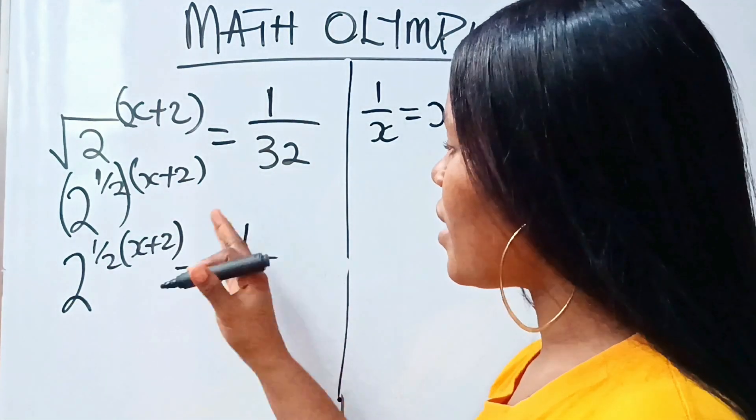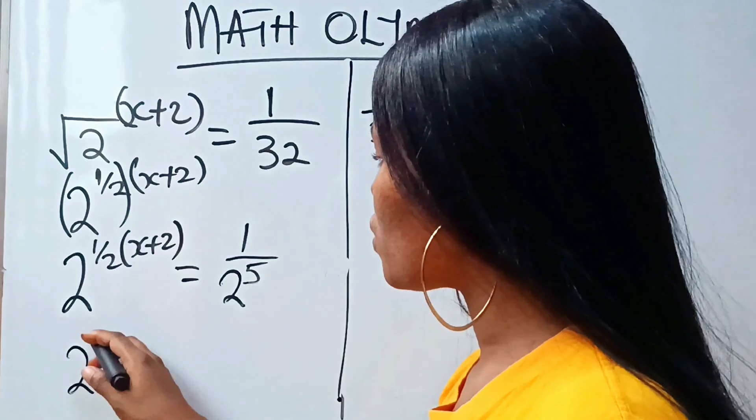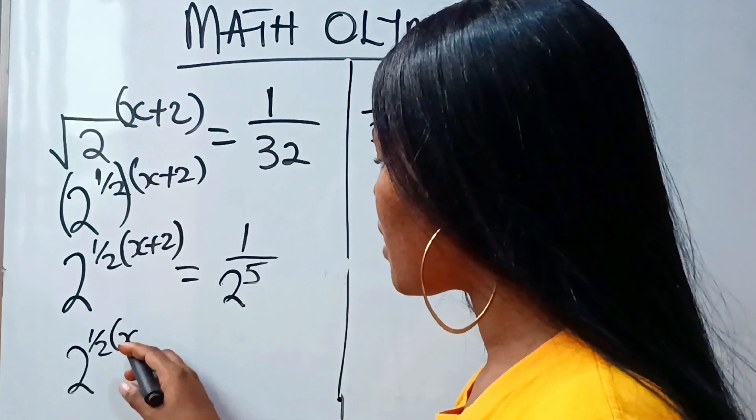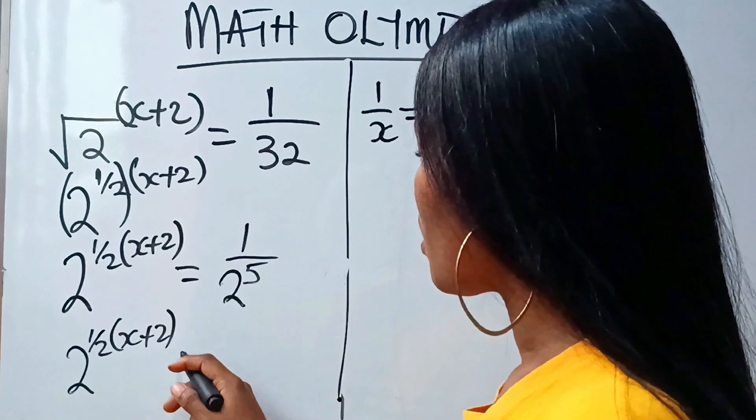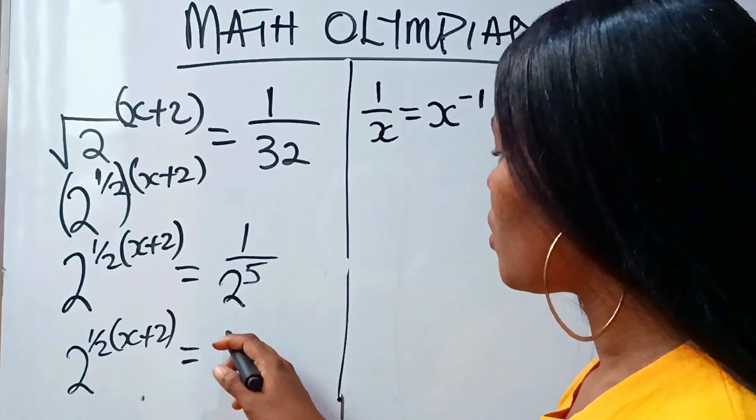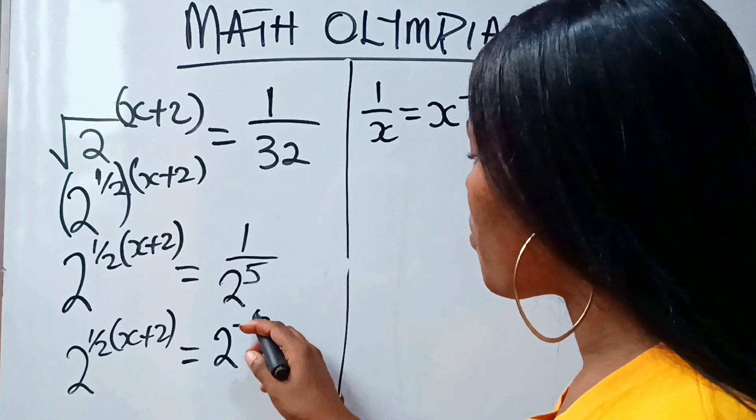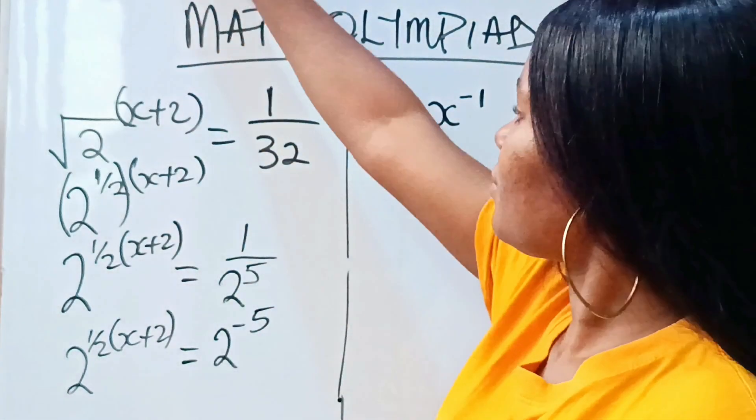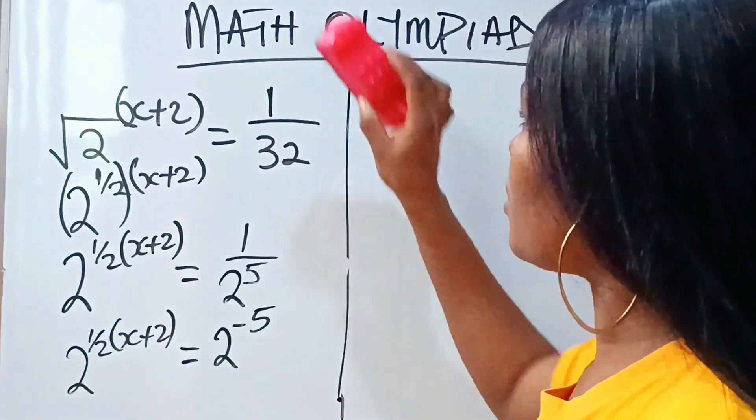So that means I can write this as 2 to the power of half times x plus 2 is equal to 2 to the power of minus 5.